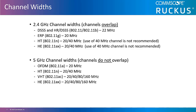802.11n operates in both 2.4 gigahertz and 5 gigahertz and uses either 20 megahertz or 40 megahertz wide channels. Remember, due to the limited number of channels in the 2.4 gigahertz space, channel bonding there is not recommended. 5 gigahertz channels are considered to be non-overlapping.